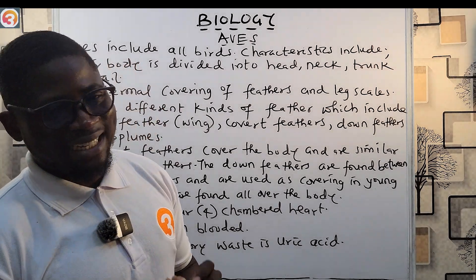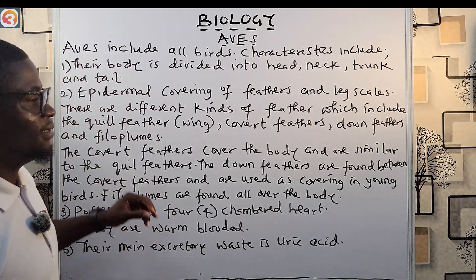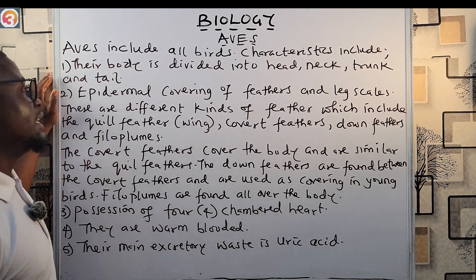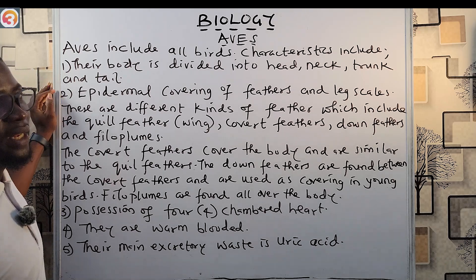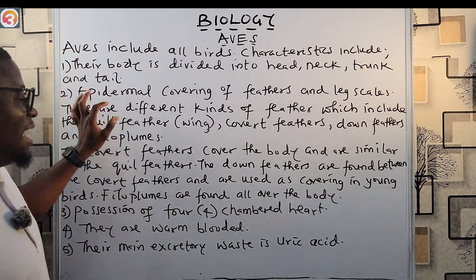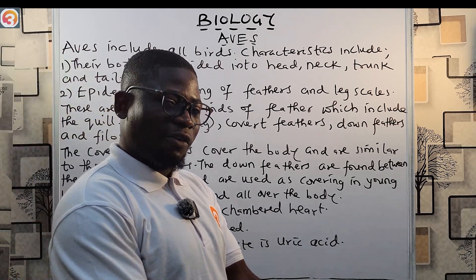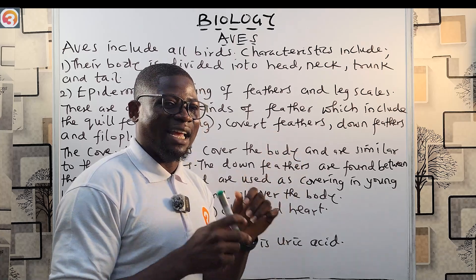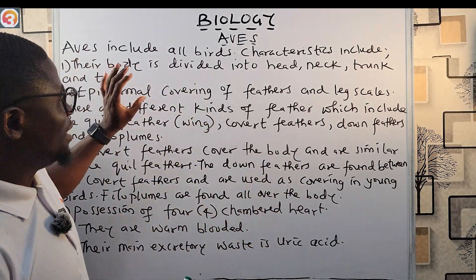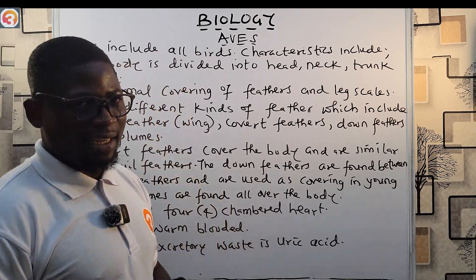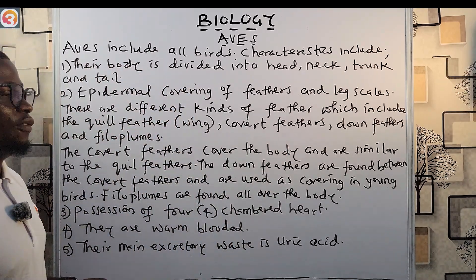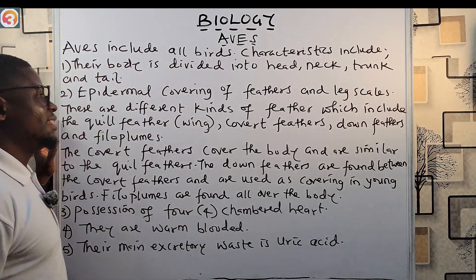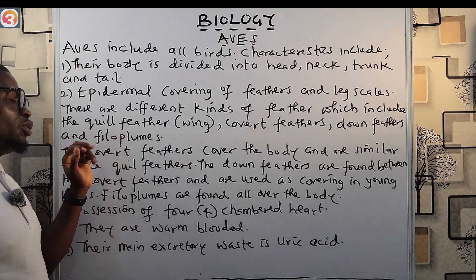The body of birds is divided into the head, the neck, the trunk, and the tail. They also have an epidermal covering of feathers and leg scales. The epidermis is the outermost layer of the skin. Their legs have scales, and you must take note of that.